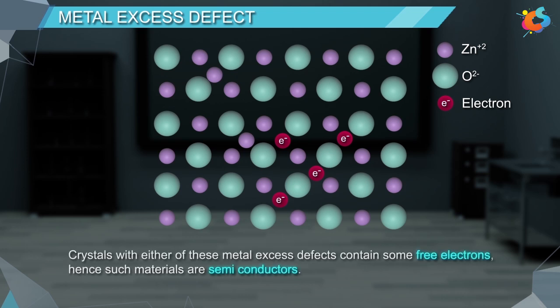Crystals with either of these metal excess defects contain some free electrons. Hence, such materials are semiconductors.